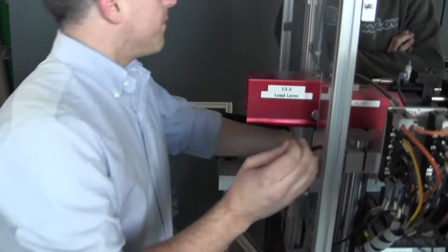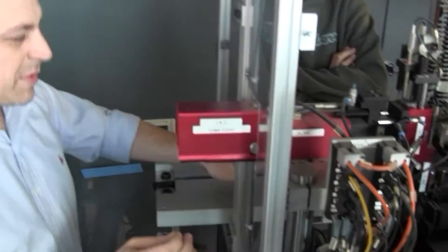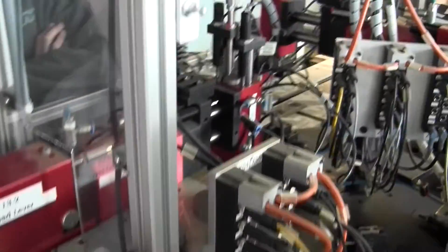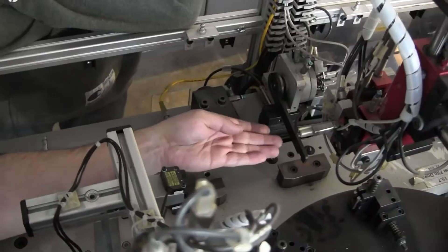So the process starts with a pallet with a sub-assembly switch coming on it into this way. It stops at this station here. It's lifted and located.